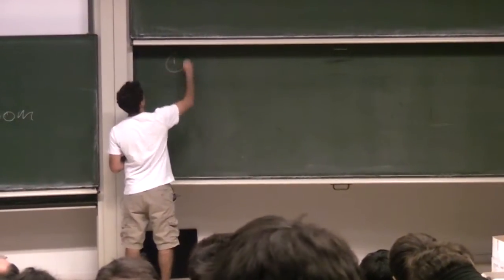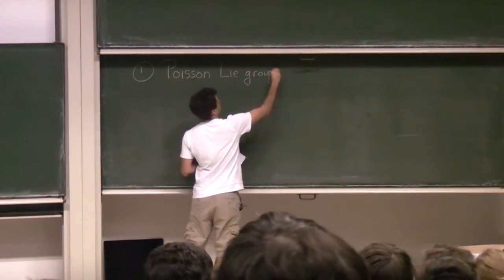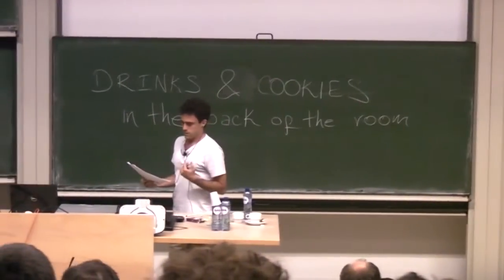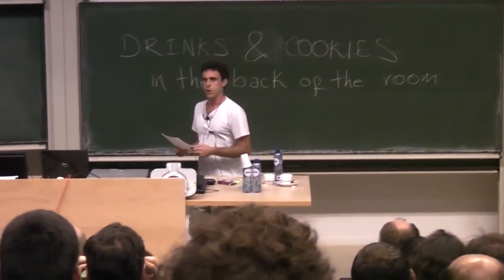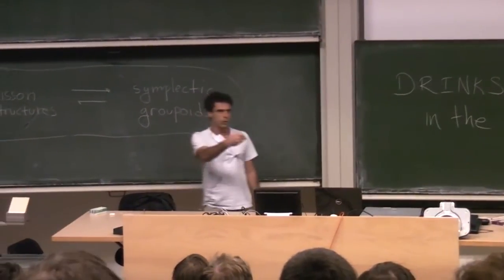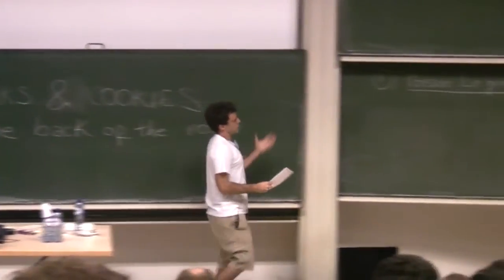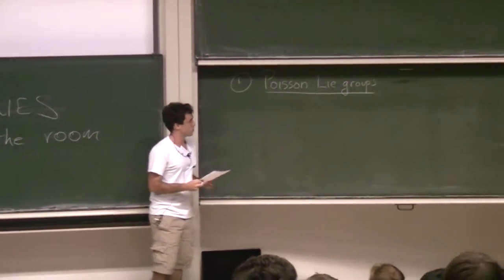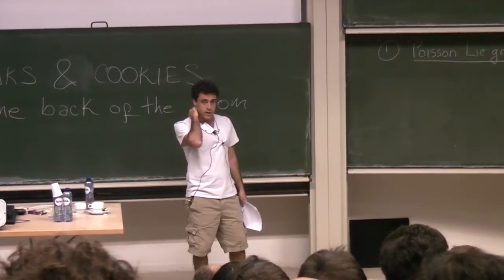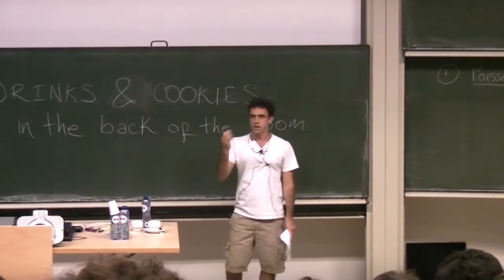The first topic is Poisson Lie groups. This is historically the first instance. I could have planned this talk to start with the most general result I know about this correspondence and then study particular cases, but I chose to do the other way around and follow the historical evolution of these ideas. The first example related to Poisson geometry of a multiplicative structure is that of a Poisson Lie group, which appeared in the early 1980s, basically in the work of Drinfeld and Semenov-Tian-Shansky. This came up in the context when they were studying integrable systems.